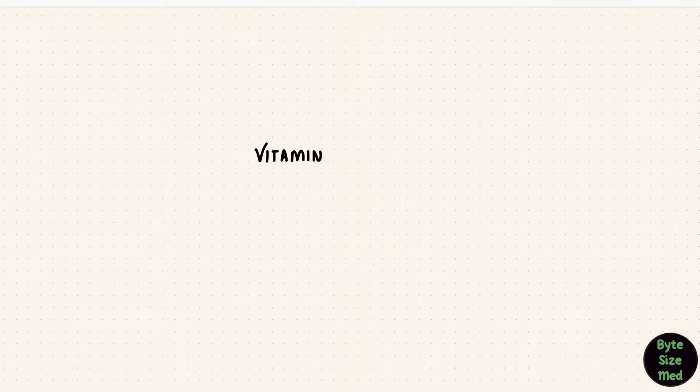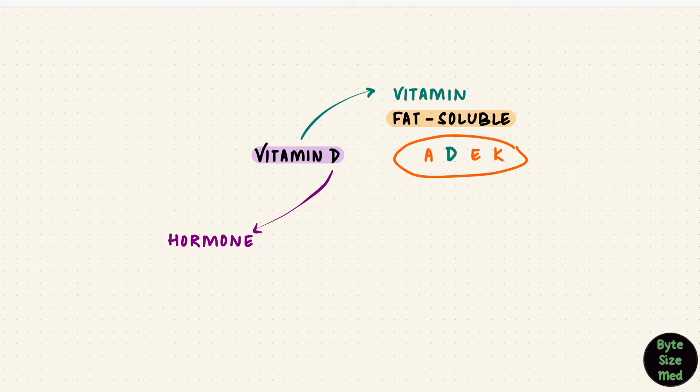A little background on vitamin D. It's both a vitamin and a hormone. It's a fat soluble vitamin along with vitamins A, E and K. The rest are water soluble.